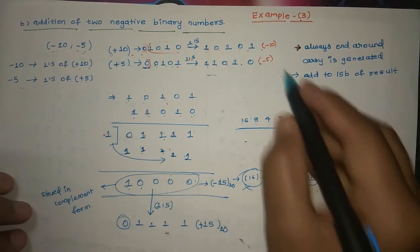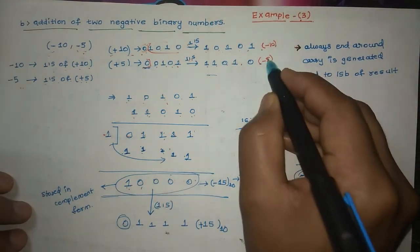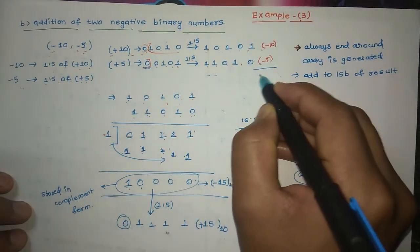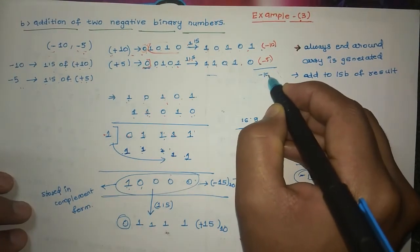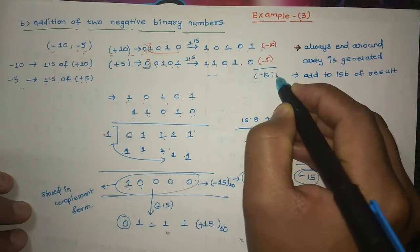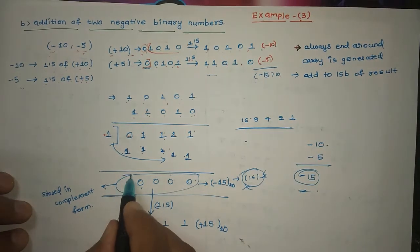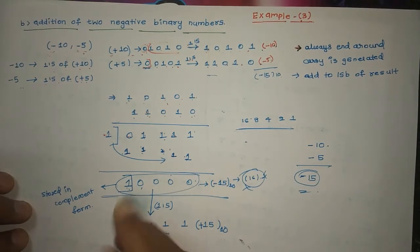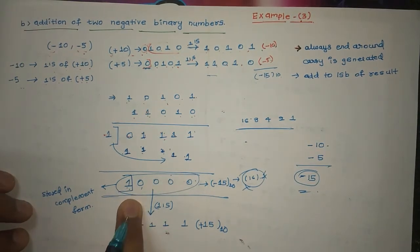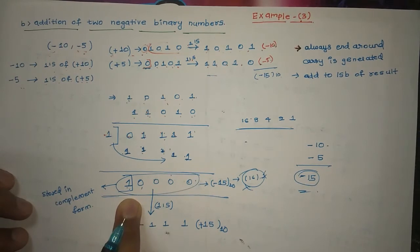We should get minus 10 plus minus 5 equals minus 15. Here, 1 represents the sign bit, and here 1 represents negative.